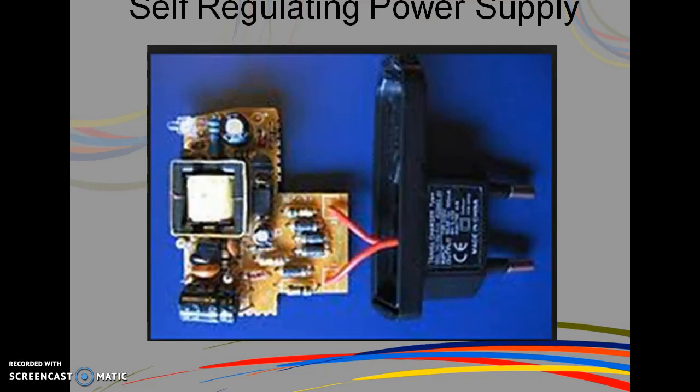It is an embedded circuit that converts an unregulated AC into a constant DC. With the help of the rectifier it converts the AC supply into DC. Its function is to supply a stable voltage to a circuit or device that must be operated within certain power supply limits.